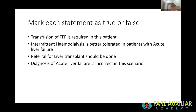Key teaching points from the vignette: Transfusion of FFP is not required — you transfuse only when there is active bleeding; the INR is used as a prognostic marker. Intermittent hemodialysis is not better tolerated in liver failure — continuous renal replacement therapy is preferred. Every patient with acute liver failure should be referred for liver transplant evaluation.